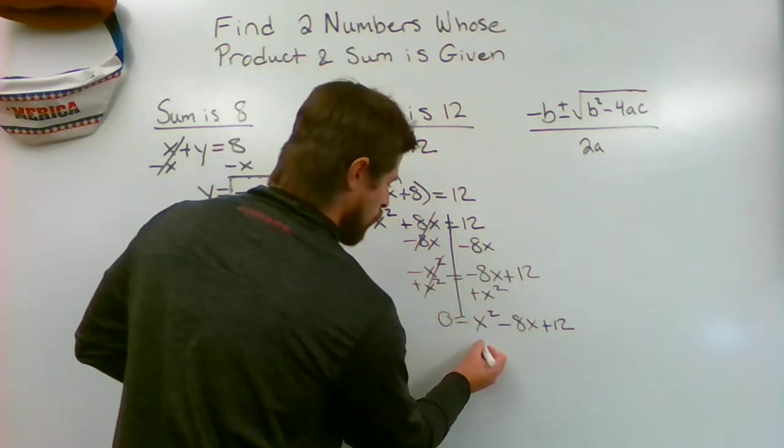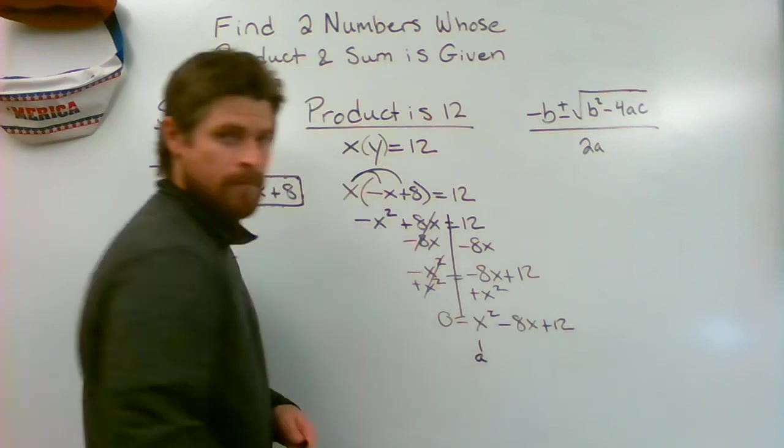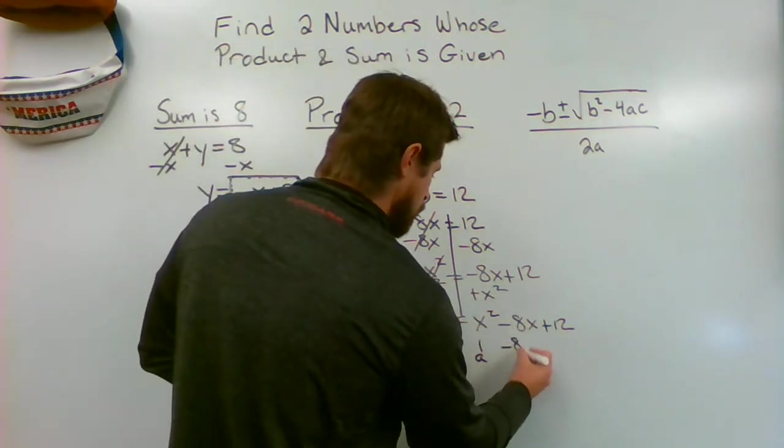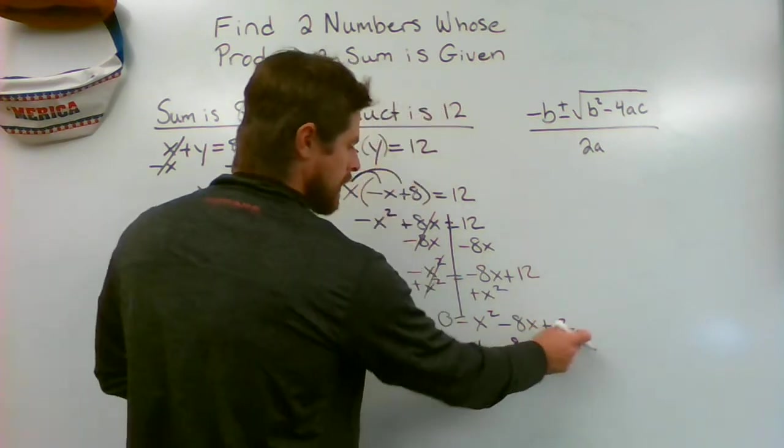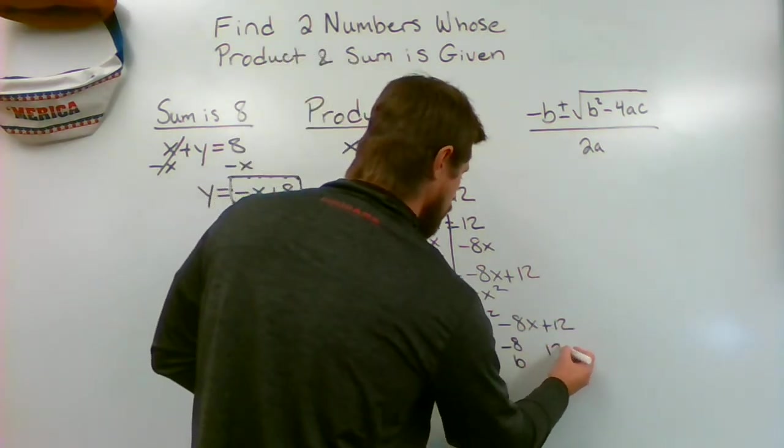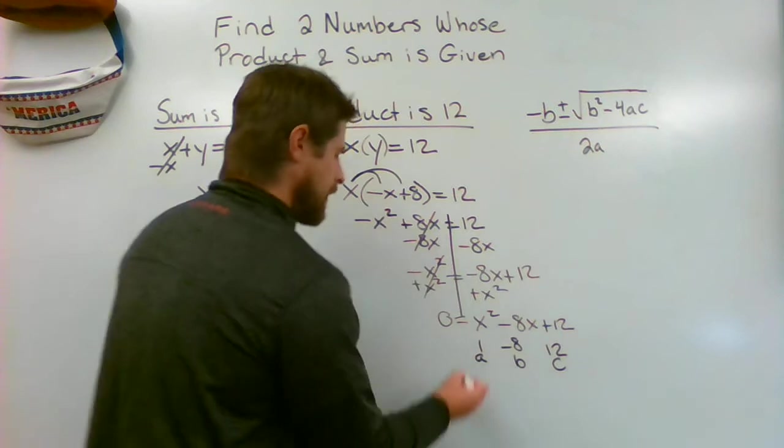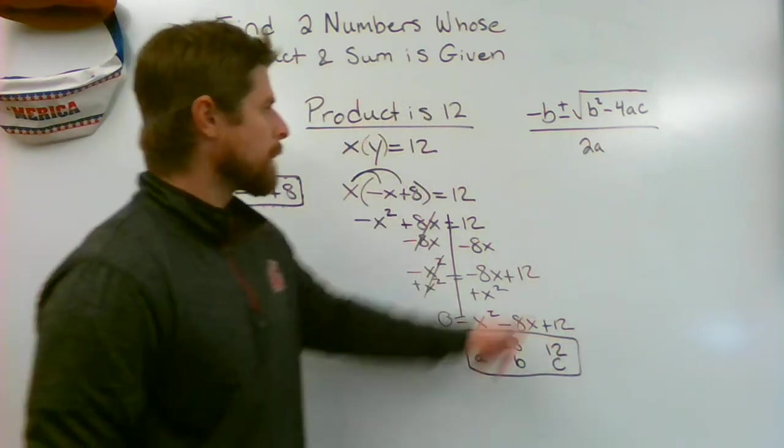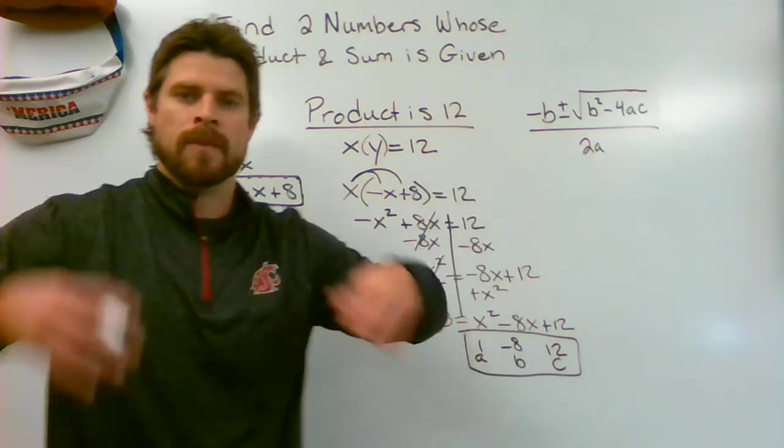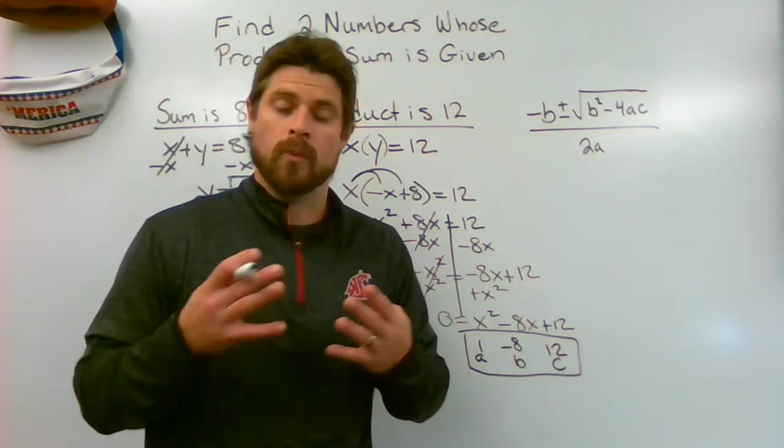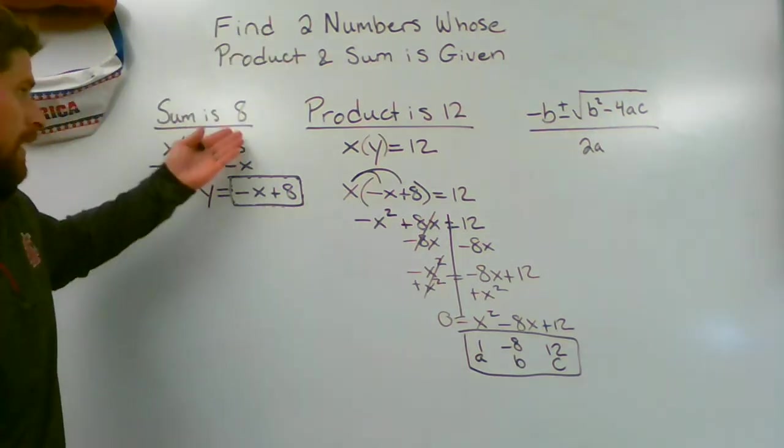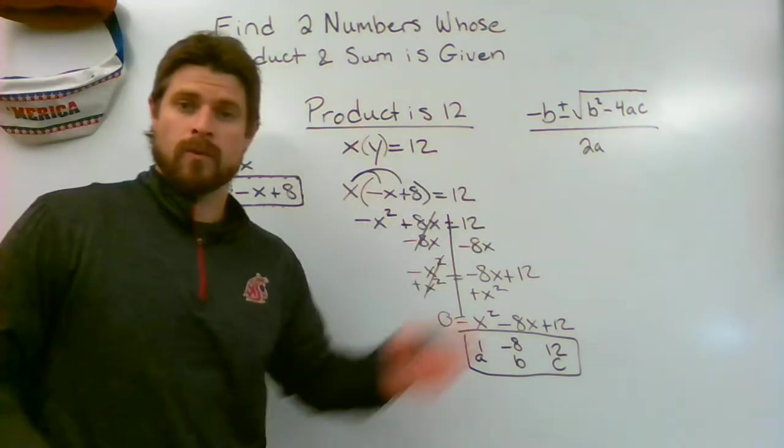Where does these B's, A's and C's come from? This right here. So the X squared, that's going to be your a, so there's no number here, no coefficient, that's a one, so one is your a. Negative 8 is your B and 12 is your C. Now this is like your key code, you're going to take that information, you're going to plug it into the quadratic formula, work it all out, and what we're going to be left with is our two numbers that when we add together we'll get 8 and when we multiply together we're going to get 12.